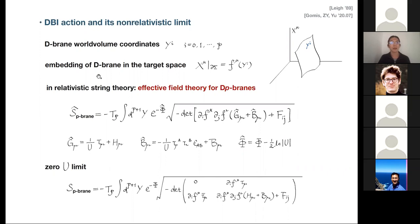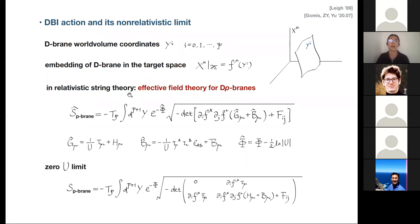We embed this D-brane in a curved target space via an embedding function F^mu. In relativistic string theory, to derive the effective action describing the dynamics of the D-brane, you take a worldsheet topology with a boundary and insert vertex operators denoting open string states on the boundary. Differentiating gives rise to a coherent state of open strings, leading to an effective boundary action.